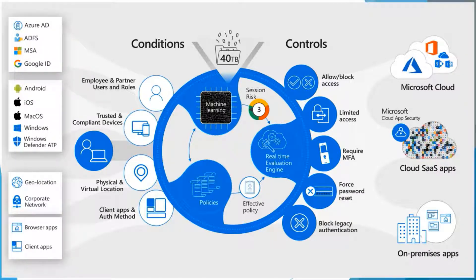And here is a review of certain conditions and controls that can be set in place — the blocking of access based on the device state. We alluded to that earlier with conditional access policies based on whether the device is compliant or not compliant with policies that we specified in Intune. We can restrict access based on that compliance to just certain resources, require MFA, force a password reset based on the user's risk — whether the user's identity has been found to be compromised on the dark web. And we can block certain applications based on their legacy status, as those are less secure than modern authentication applications.